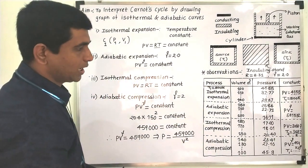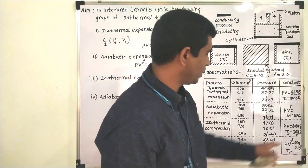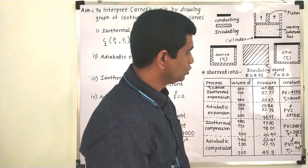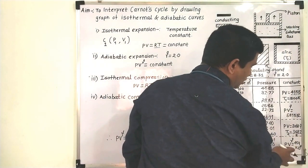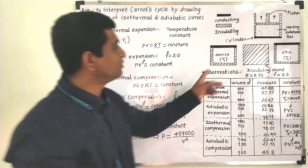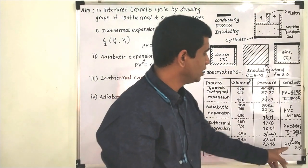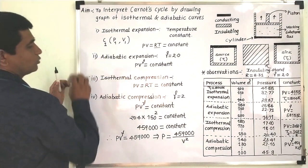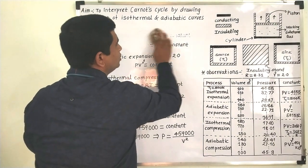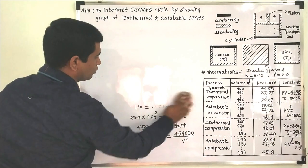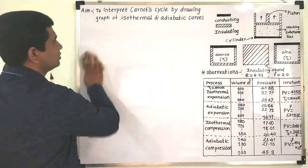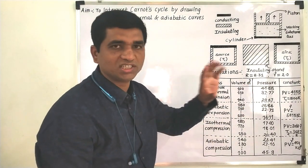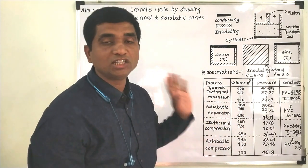Now we draw the graph of all four processes. Volume is plotted on the x-axis (minimum 100, maximum 190) and pressure on the y-axis. We also confirmed that after returning to V = 100, the temperature returns to 500 K (T1), verifying the cycle is complete. T1 = 500 K (source) and T2 = 368.2 K (sink).